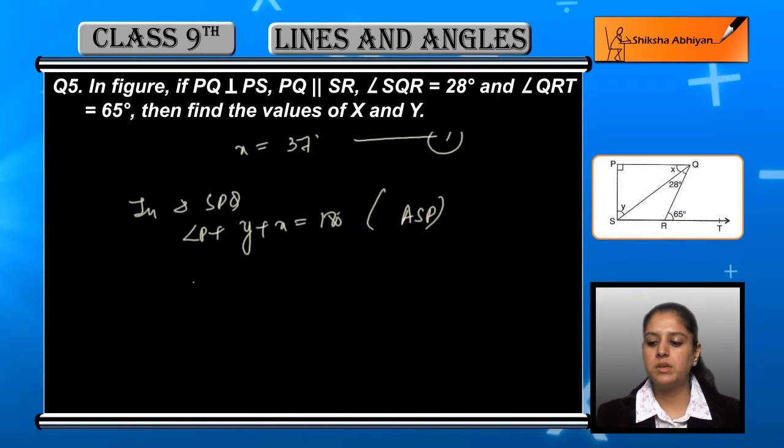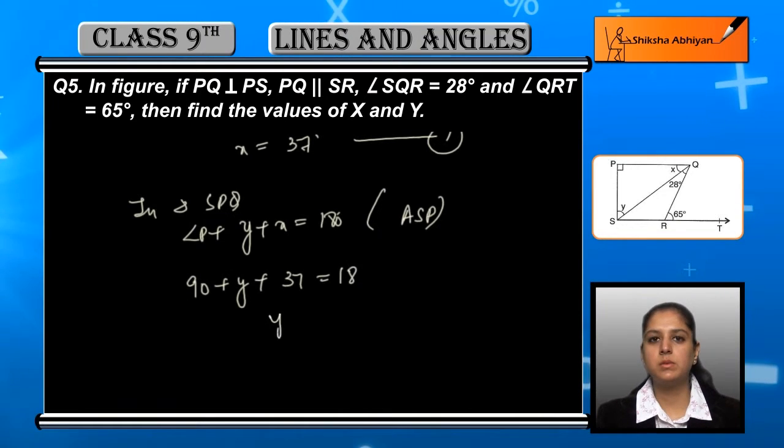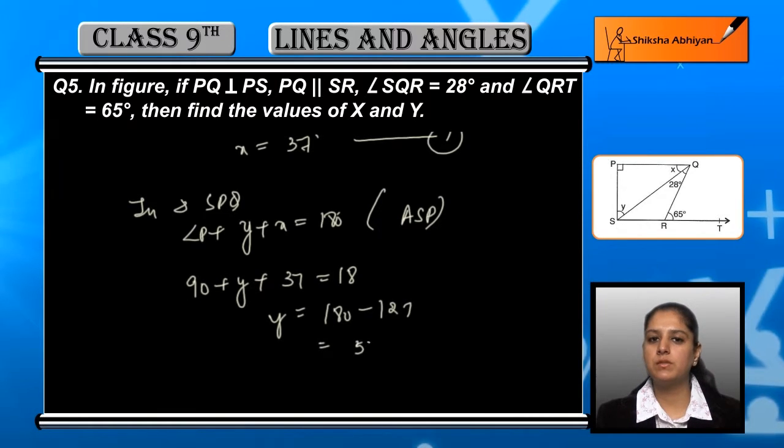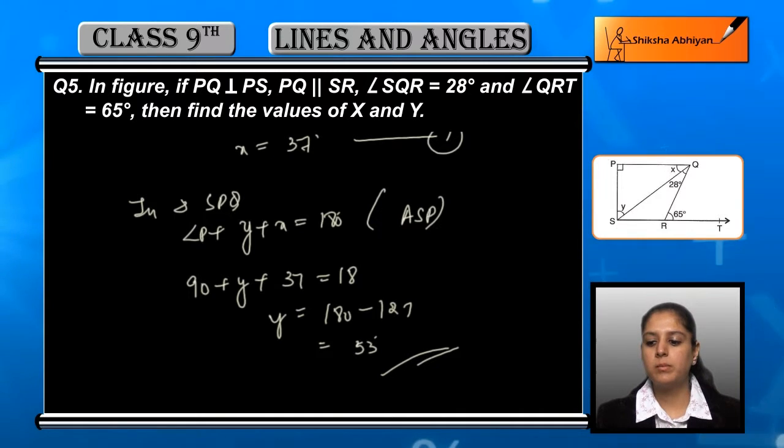Now in triangle SPQ, angle P plus Y plus X is equal to 180, because of the angle sum property of a triangle. Now, X's value we have 37 already found and P is 90. So 90 plus Y plus 37 is 180, and Y is equal to 180 minus 127, which is ultimately equal to 53 degrees.